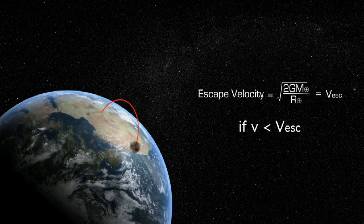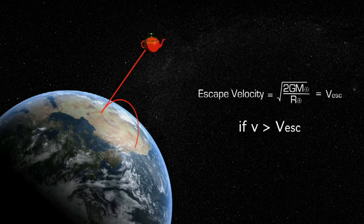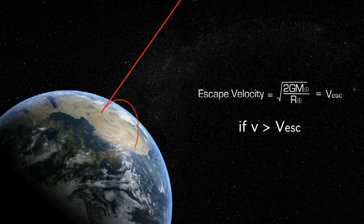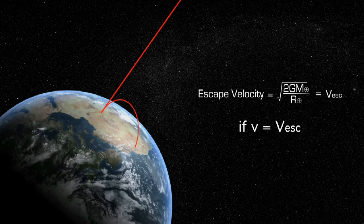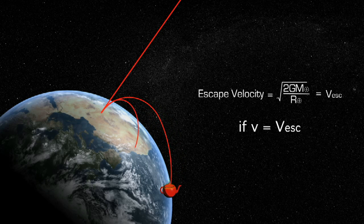If it travels much faster than the escape velocity, it'll leave the Earth and never return. If it travels at exactly the escape velocity, and also leaves the Earth at a particular angle which isn't straight up, it'll neither come back down nor fly away but go into orbit.